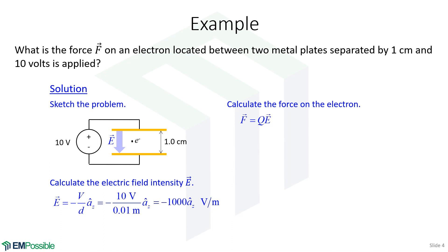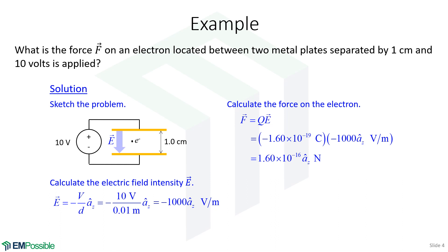Now that we have the electric field intensity, we can calculate the force on an electron using F equals QE. In this case, Q is the charge of a single electron — that is negative 1.6 times 10 to the minus 19 Coulombs. And then we also put in our electric field intensity. We turn the crank and we end up with 1.6 times 10 to the minus 16 Newtons in the positive Z direction.